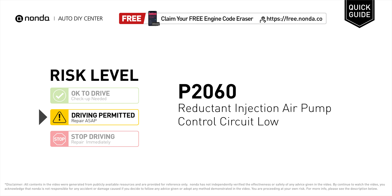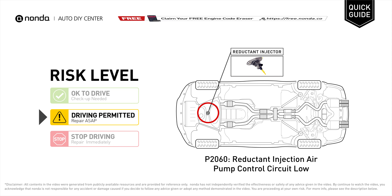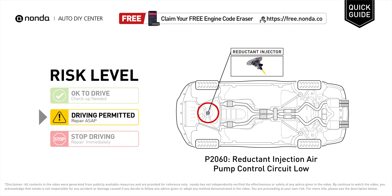P2060 is a diagnostic trouble code for reductant injection air pump control circuit low. Under this circumstance, short distance driving is permitted but your vehicle should be repaired as soon as possible. It means the PCM has detected a variation in the voltage coming from the reductant injection air pump control circuit that is below the normal limits set by the vehicle manufacturer.